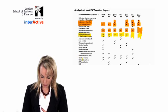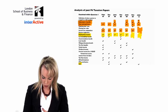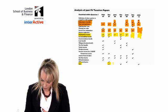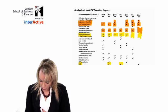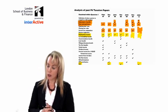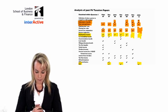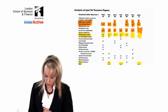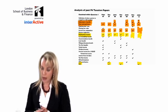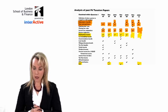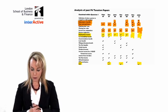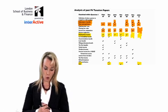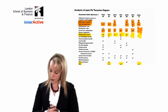Other topics commonly tested in question one include national insurance, which came up in December 07, June 08, and June 10. Partnership is not a topic I would usually associate with question one, but in the last exam it did appear there, which was a bit unusual. You've got to be prepared for a lot of different topics in question one, which is worth 25 or 30 marks.